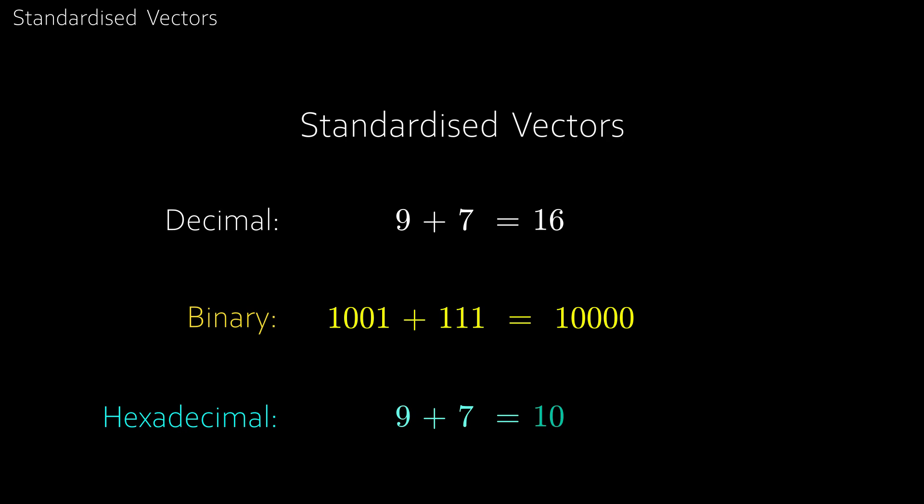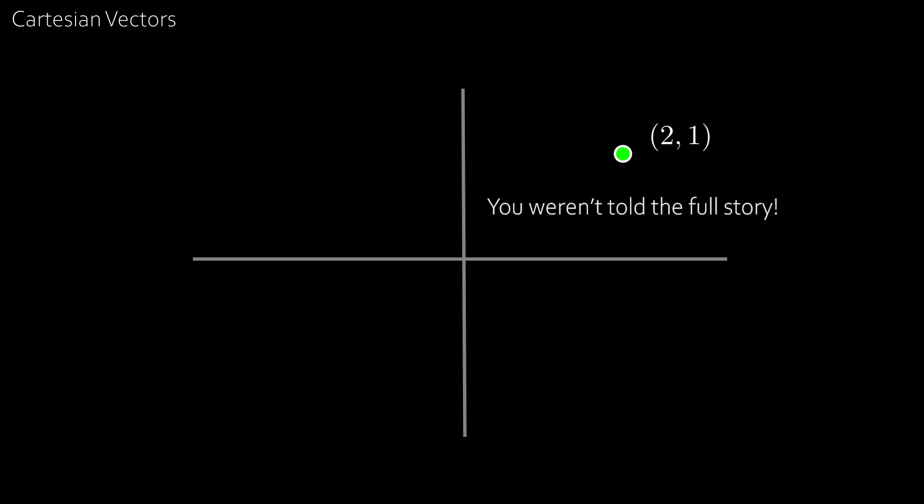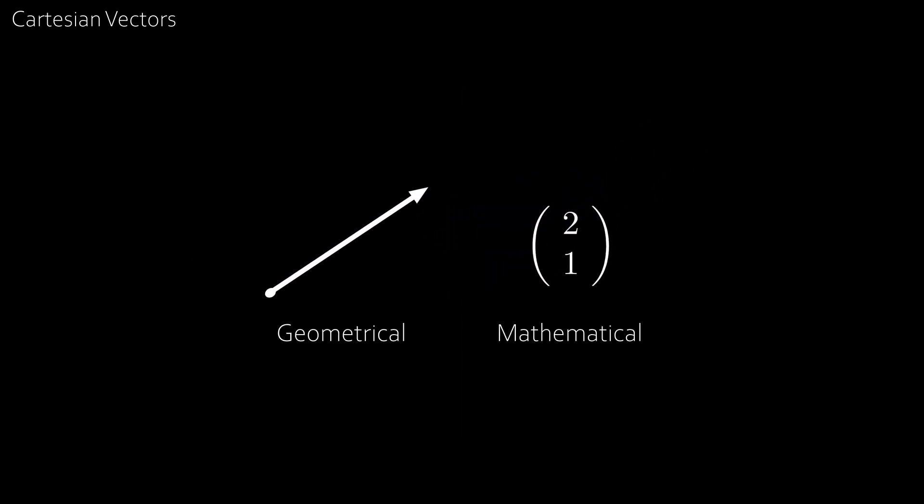The standardised system for vectors are known as Cartesian vectors, which you may have already seen before. So let's draw some axes, and let's plot the coordinates 2, 1. When you were first plotting coordinates years ago, you actually weren't told the full story. This is actually a vector, and particularly the vector 2, 1. The 2 refers to how much you move along the x-axis, and the 1 is for the y-axis, the same as the coordinate, and together they give our vector. And this is our standardised vector, just like the decimal system for numbers.